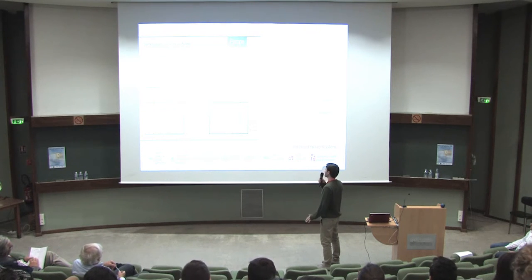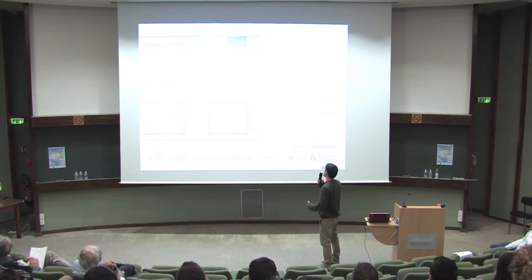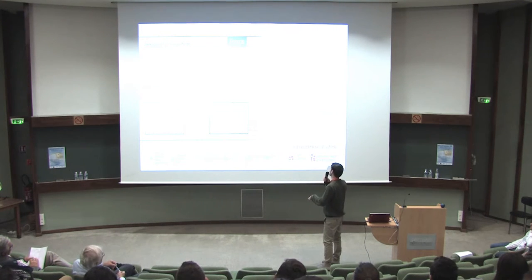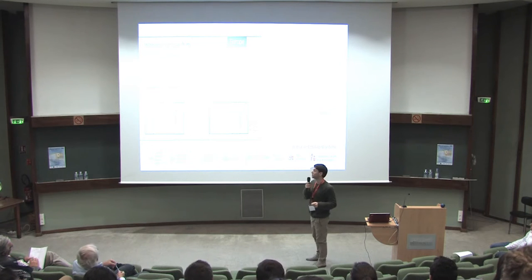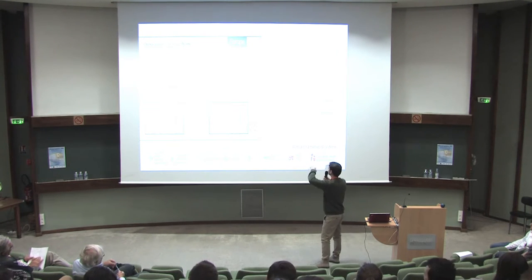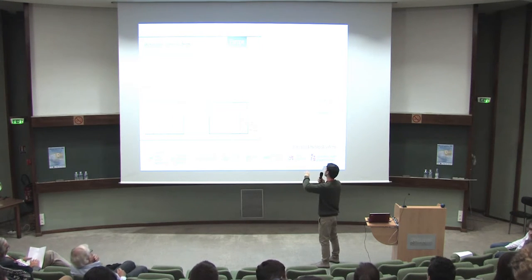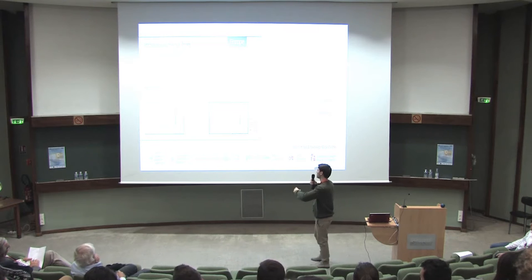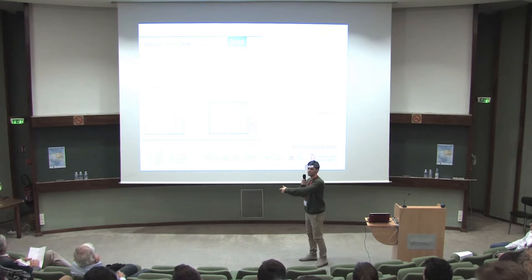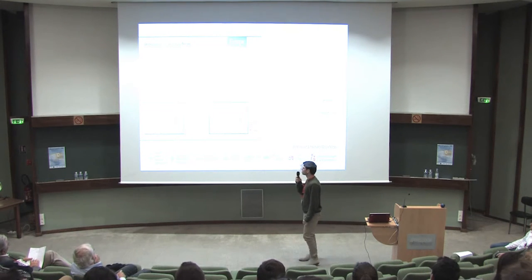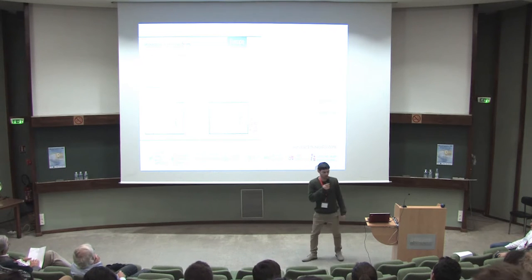Then we have near-term risks — 20 years from now. And then, as you saw from Matteo's previous slides, there are two possible scenarios: two degrees of temperature increase and four degrees, from 80 years from now. So you see that the risks increase with time.